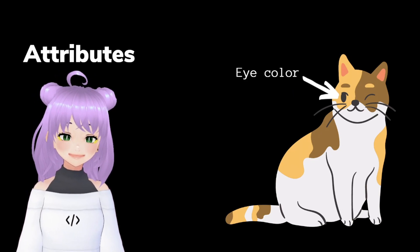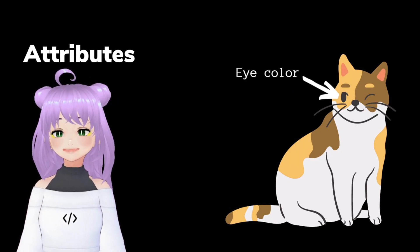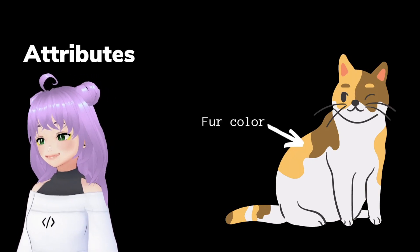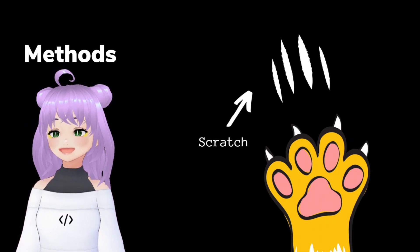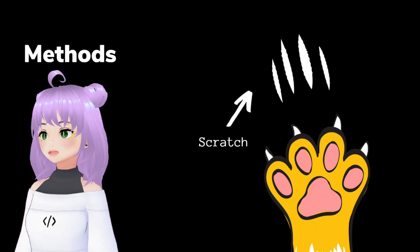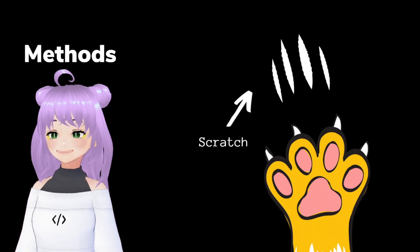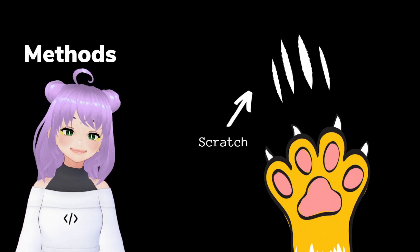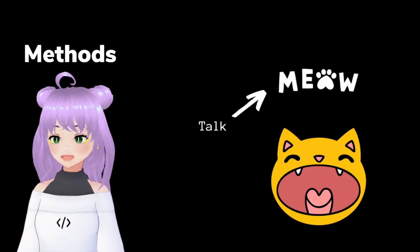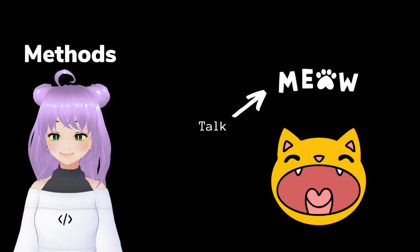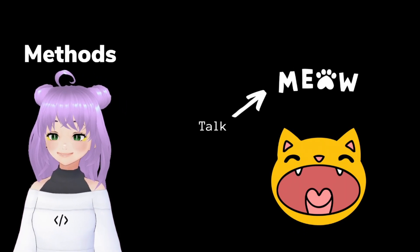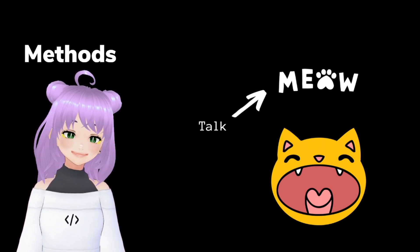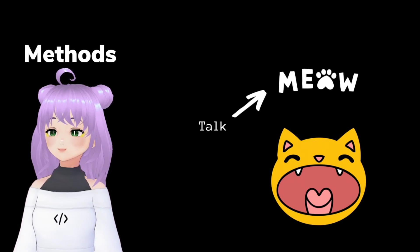Attributes are the physical characteristics that describe our class. In this example, it can be the eye or the fur color of a cat. Methods are the functions of that specific class — in other words, they show what actions a cat can do. For example, a cat can scratch your face or it can talk to you by saying meow. If you're liking this video so far, don't forget to like and subscribe, and write in the comments what other attributes and methods we can add to our cat class.